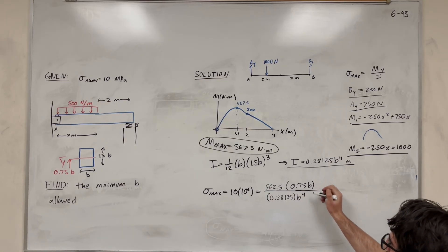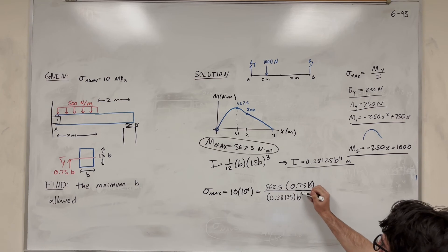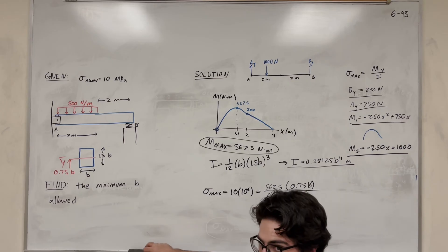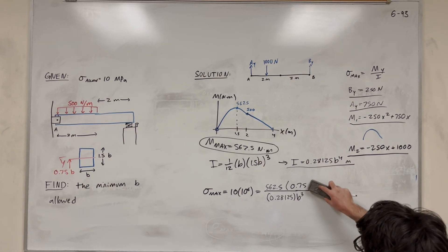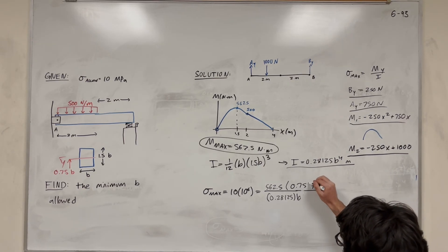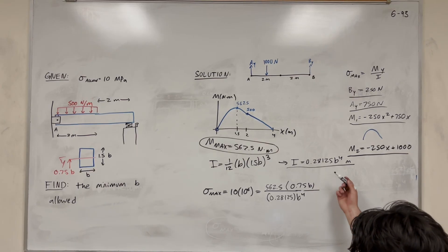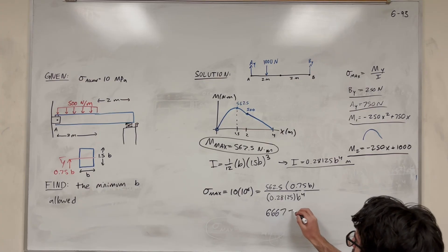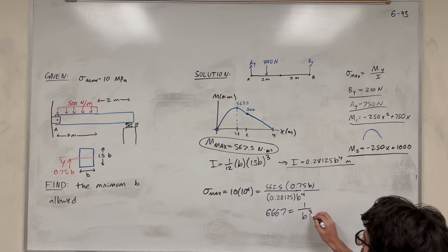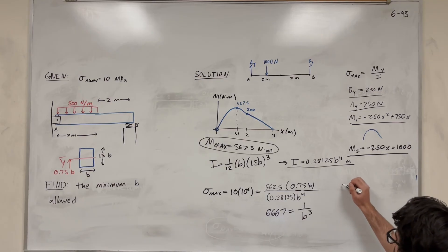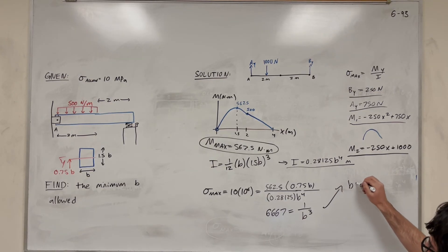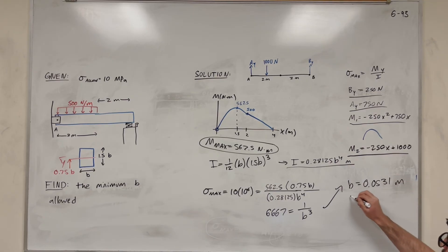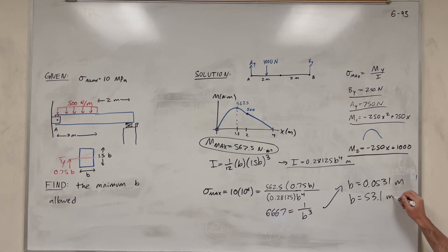The B in the numerator cancels with one power of B in the denominator, leaving B³. Moving numbers around, you get 6,667 = 1 / B³, then solving for B gives B = 0.0531 meters, or equivalently 53.1 millimeters.